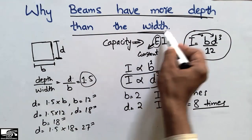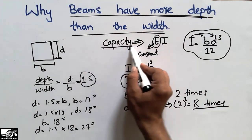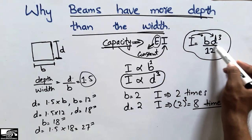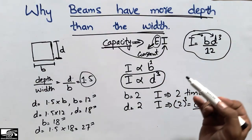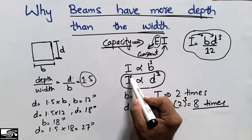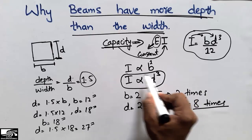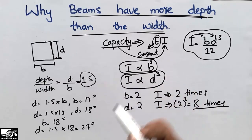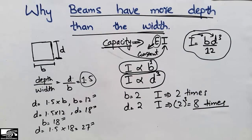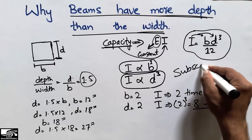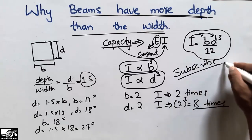This is why we must always choose the depth of the beam greater than the width — because beam capacity is directly related to moment of inertia, and increasing depth achieves much higher moment of inertia. It is proportional to the cube of the depth, while only proportional to the first power of the width. I hope you understood today's lecture. Don't forget to subscribe to the channel for daily engineering videos. Thank you for watching.